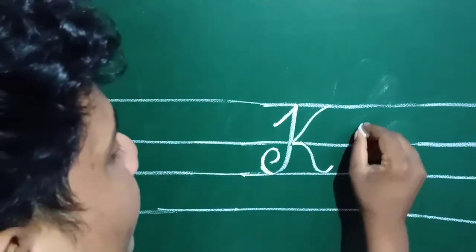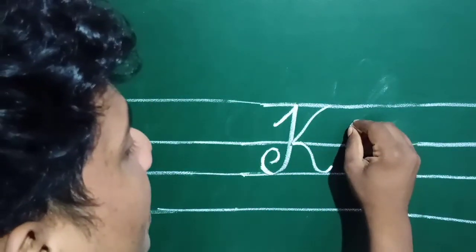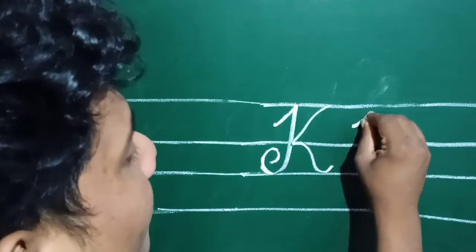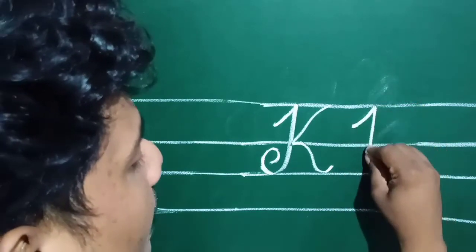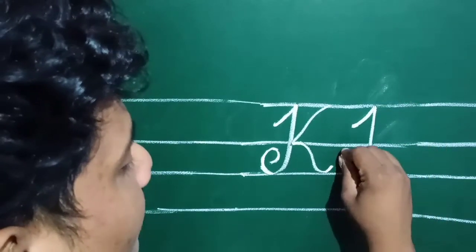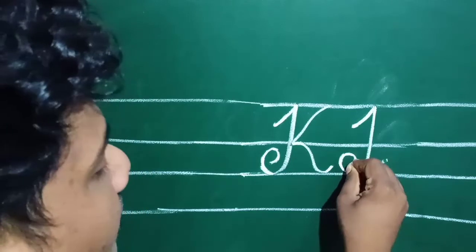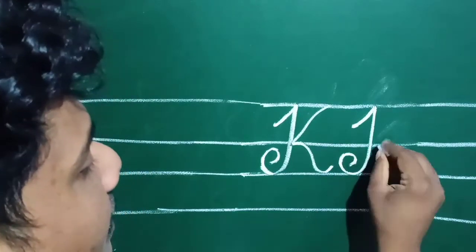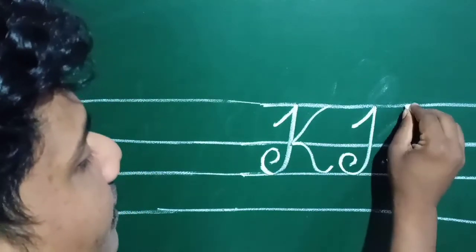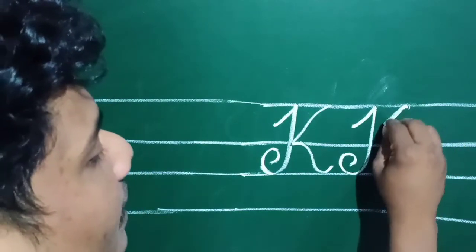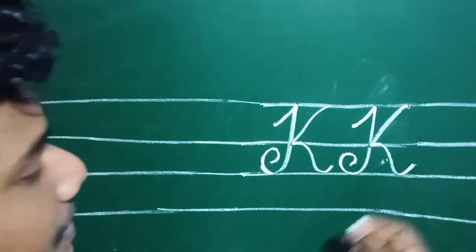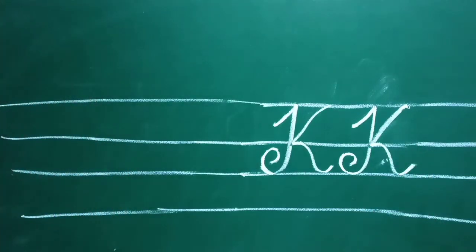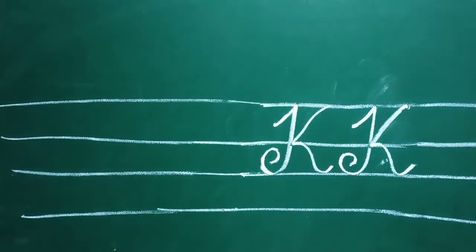Once again — start from here, then draw like this, and then from here. Capital letter K.